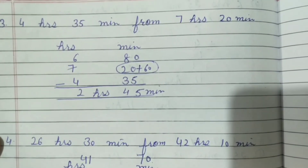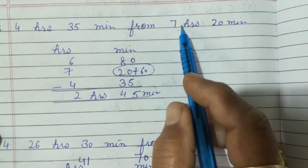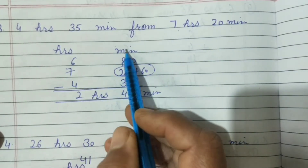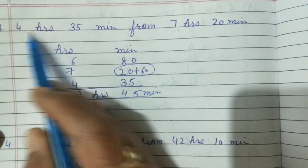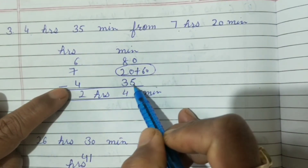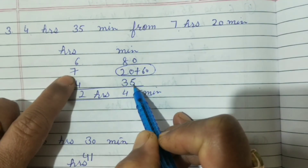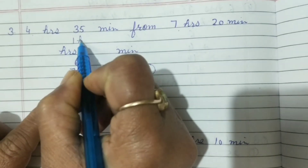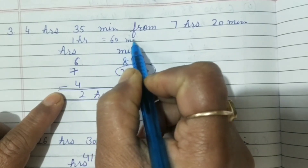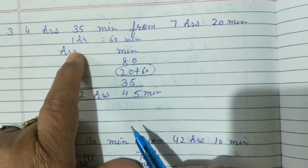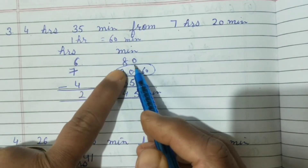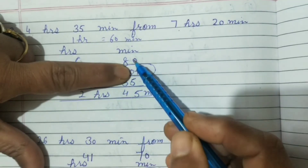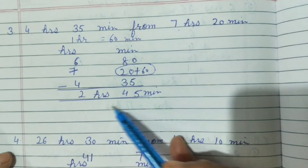Question 3: Subtract 4 hours 35 minutes from 7 hours 20 minutes. First, write hours and minutes. This question is in hours and minutes. Write 7 hours 20 minutes, then 4 hours 35 minutes below. You cannot subtract 35 from 20, so borrow 1 from here — it becomes 6. In 1 hour there are 60 minutes, so you borrow 60 minutes and add it: 20 plus 60 equals 80. Now 6 minus 4 is 2, and 80 minus 35 is 45. The answer is 2 hours 45 minutes.